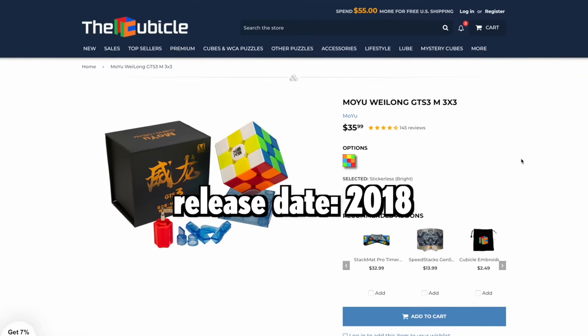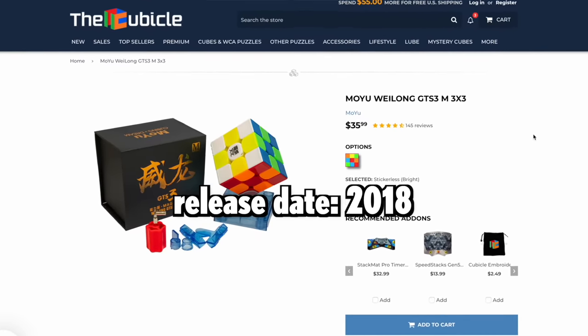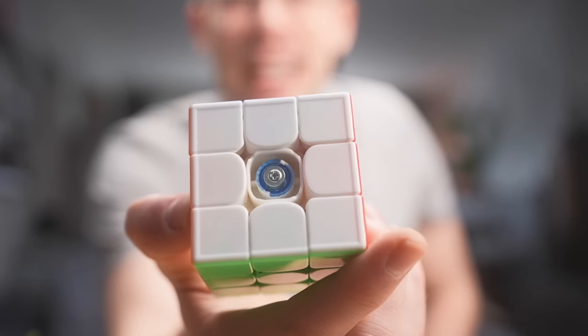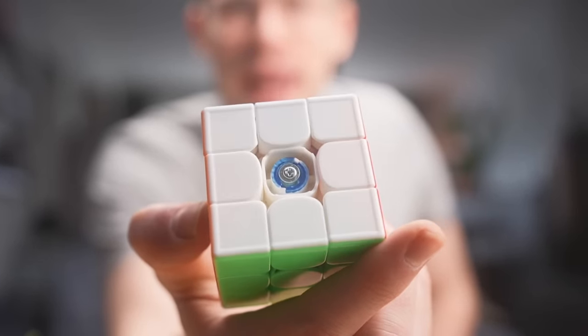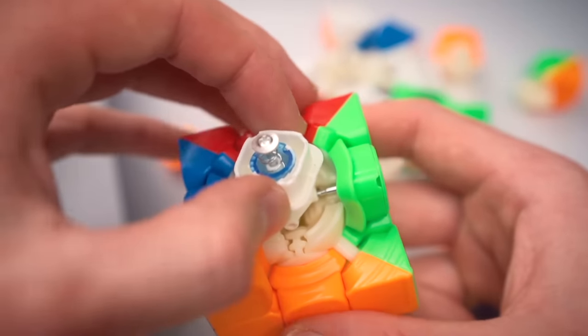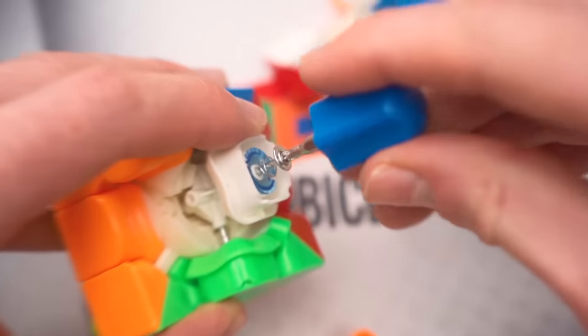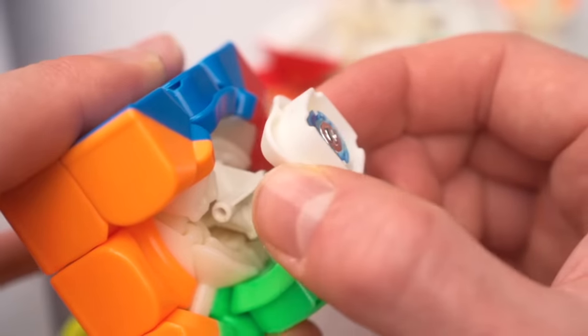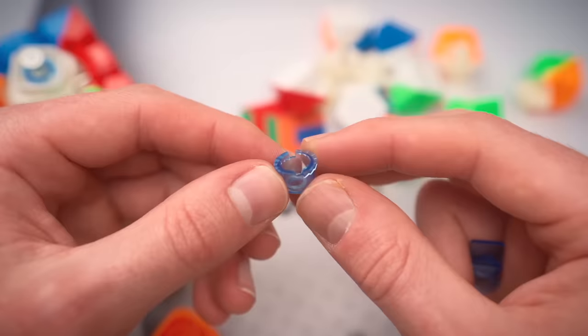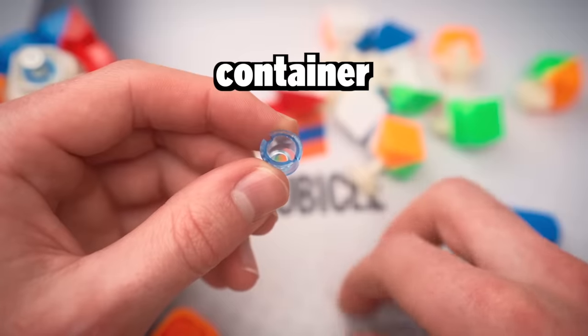Now, the Moyu GTS-3M was probably one of the first, if not the first cube to implement this, and it looks like this. It is basically a way to adjust the tightness and the spring compression without having to swap anything. So let's take a better look at this dual adjustment system that is in every centerpiece of a cube. If I start screwing this screw in, I'll just have less distance and basically a tighter cube.